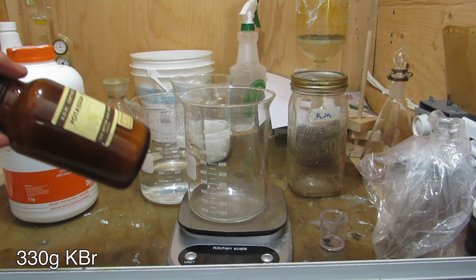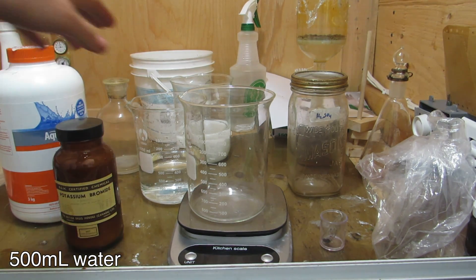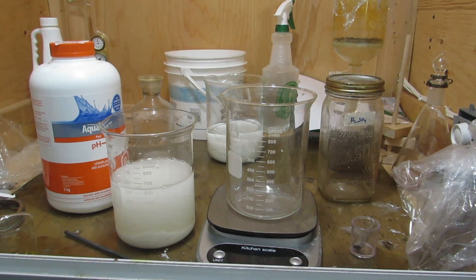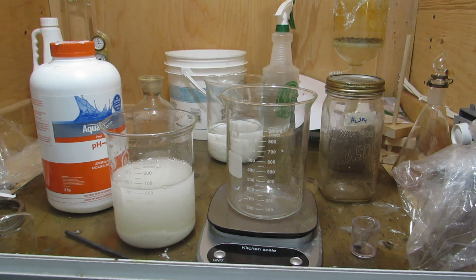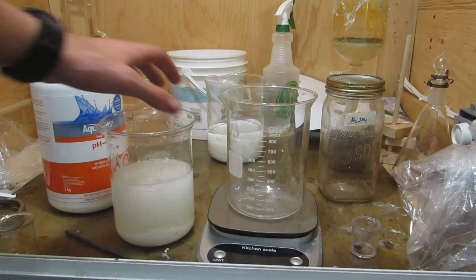To begin, we can measure out 330 grams of potassium bromide and dissolve it in 500 milliliters of water. I have some solid potassium bromide that was given to me, but you can also find potassium bromide dissolved in solution as a pool chemical at some hardware stores.